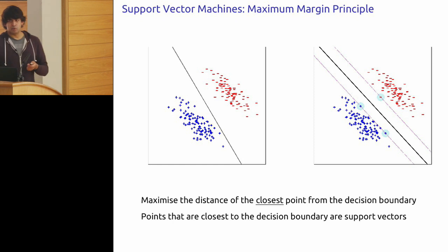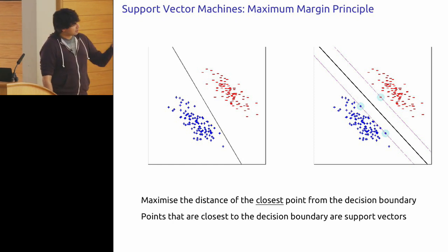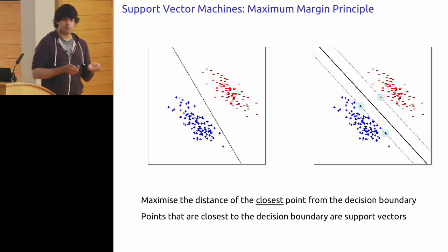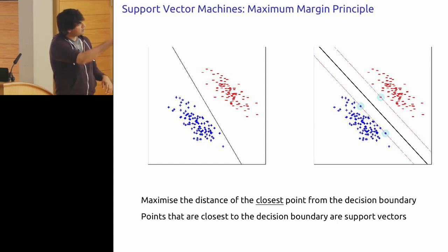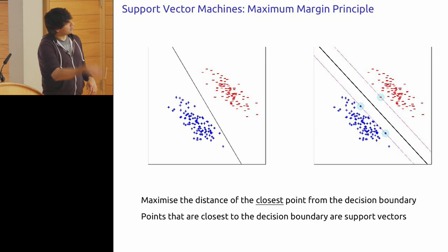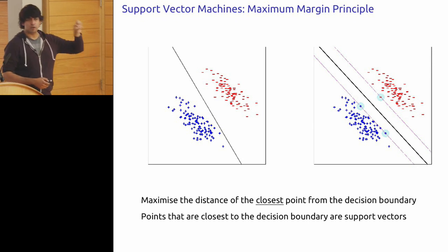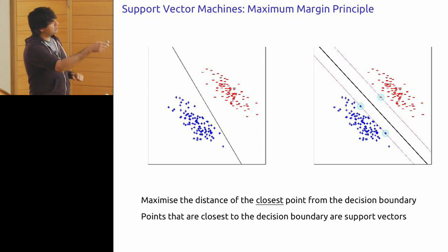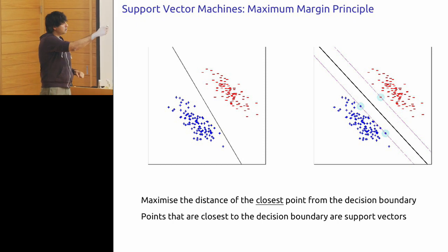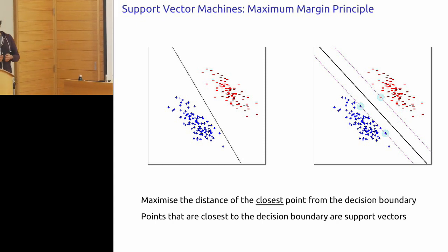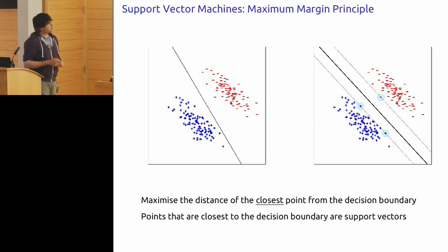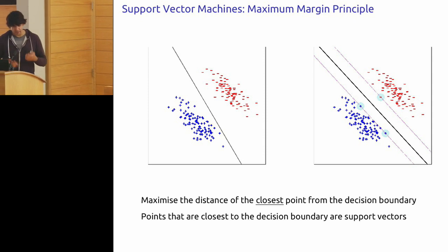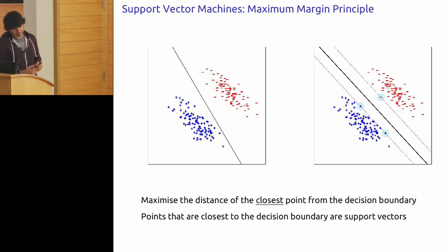The principle is called the maximum margin principle: if there are many separators, you should pick the one that maximizes the distance of the closest point from the boundary. For any separator, the closest point defines your margin — that's how much room you have to make errors. In this example, the black line on the right is the maximum margin classifier, which is what you would pick. The points closest to the boundary in that setting are called support vectors, because you can think of them as supporting these hyperplanes.